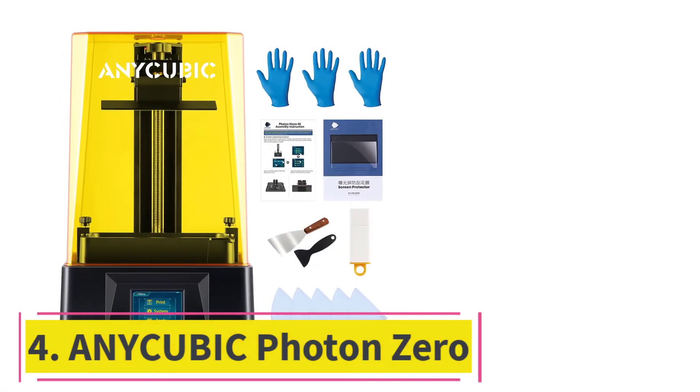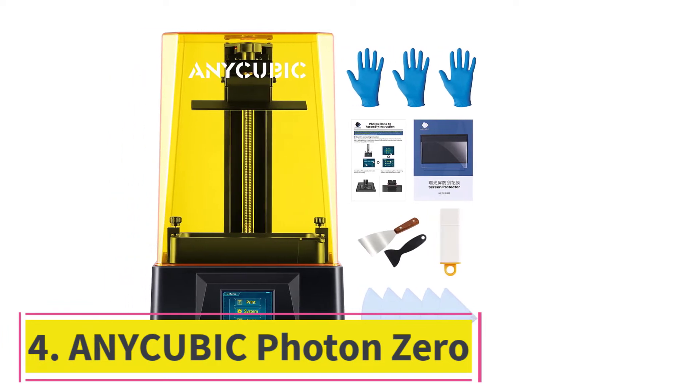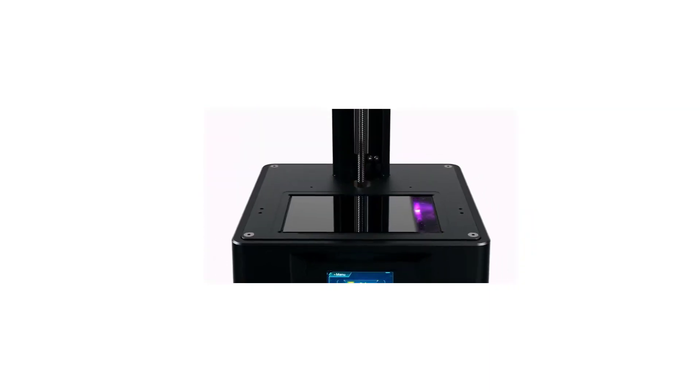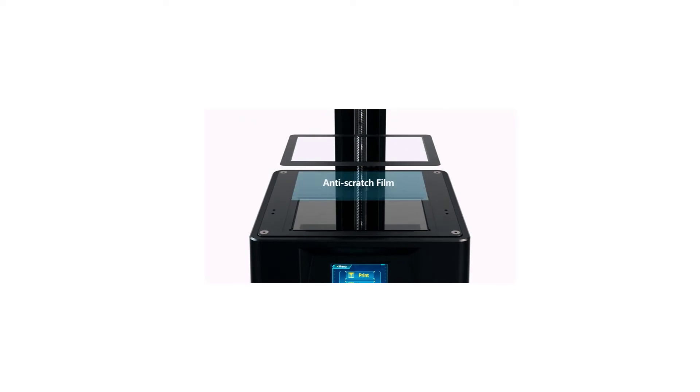At number 4, Anycubic Photon Zero. This 3D printer for making miniatures has a 16x anti-aliasing function, which allows you to enjoy well-detailed prints. Due to a linear rail, the Z-axis has smooth movements to provide impressive printing quality.